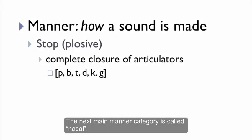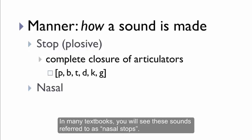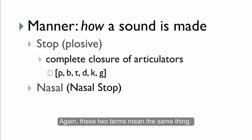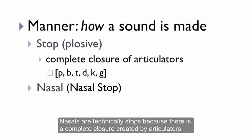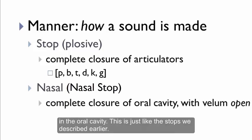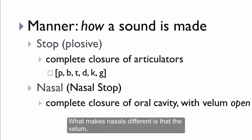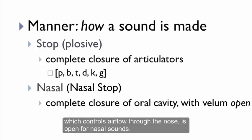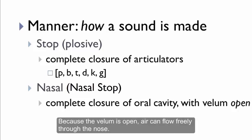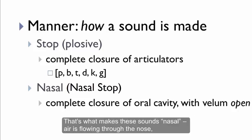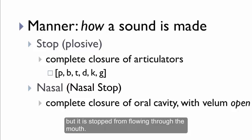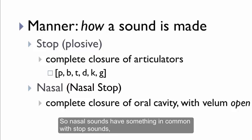The next main manner category is called nasal. In many textbooks, you'll see these sounds referred to as nasal stops, and again these two terms mean the same thing. Nasals are technically stops because there's a complete closure created by the articulators in the oral cavity, just like the stops we just described. What makes nasals different is that the velum, which controls airflow through the nose, is open for nasal sounds. Because the velum is open, air can flow freely through the nose — that's what makes these sounds nasal. Air is flowing through the nose, but it's stopped from flowing through the mouth. So nasal sounds have something in common with stop sounds, but they also have something that makes them quite different.